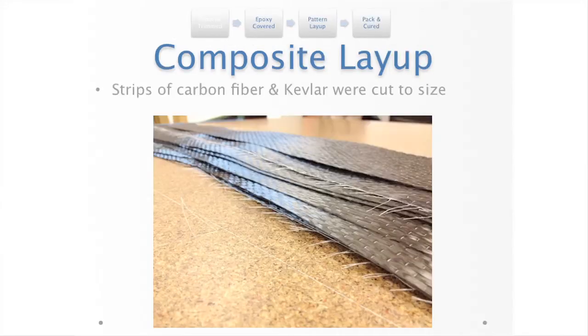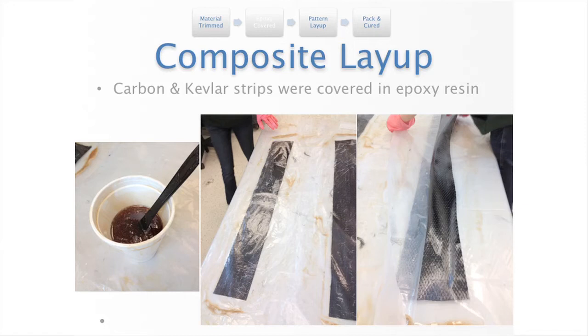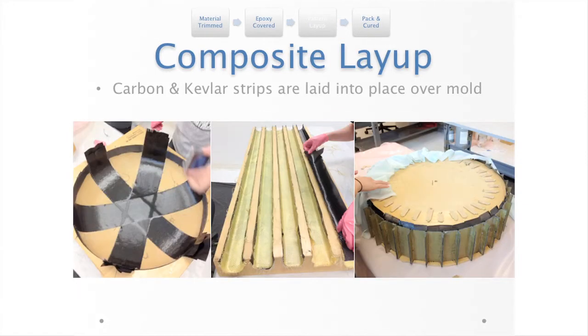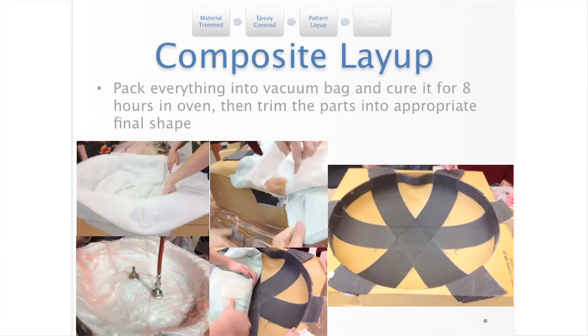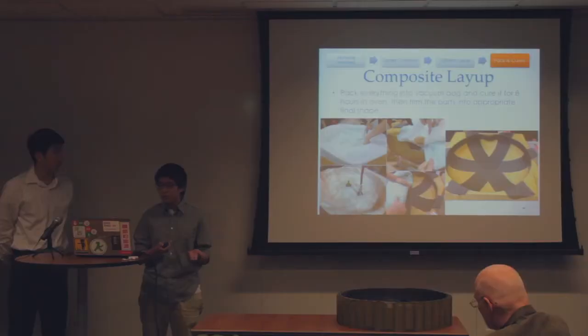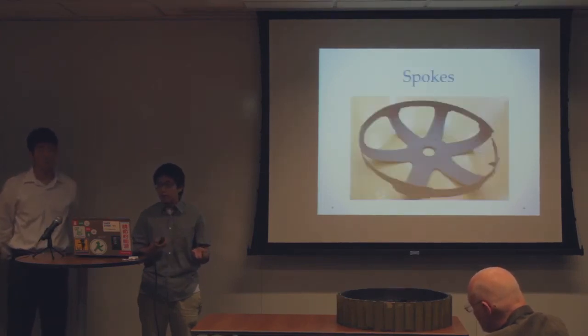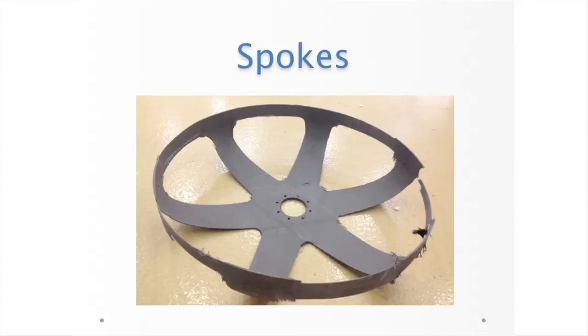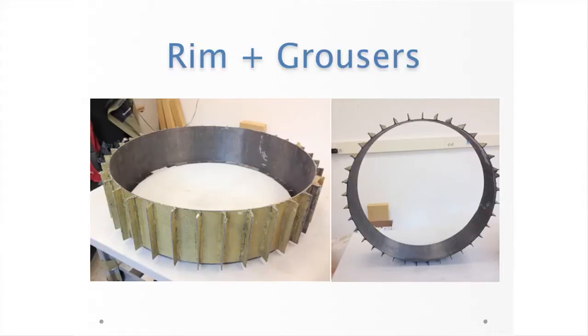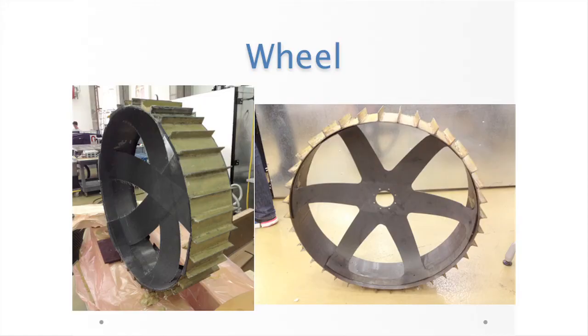And about layup, first we need to cut the materials into strips with a certain size. Then cover it with epoxy resin. Then put it on the mold with the pattern we want. Then we can bag it with peel ply, breather, vacuum bag, and then vacuum it, put it in the oven for eight hours to cure, and trim it for the certain size and pattern we want. Then after we have all the components ready, we can assemble them - first is the spokes, after the trim with the robot arm and 36 grousers. And we layup the grousers around the rim and glue all the parts together to get the wheel.